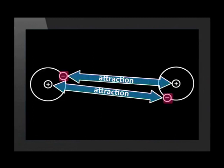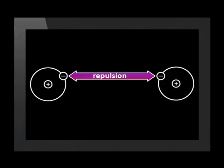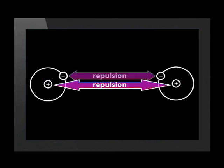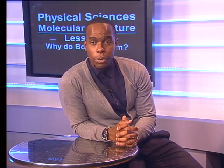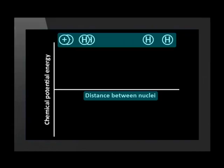The negatively charged electrons of each atom attract the positively charged protons of the other atom. The electrons also repel the electrons of the other atom. And the protons of each atom repel the protons of the other atom. The relative strengths of these forces of attraction and repulsion change as the distance between the atoms' nuclei changes.